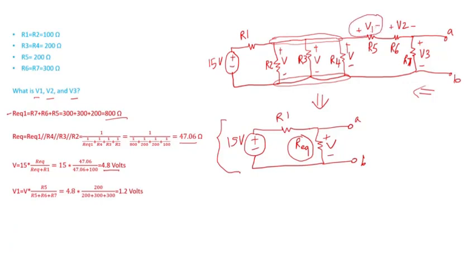V1 equals V times R5—R5 is the resistance across which the voltage I'm trying to calculate—divided by R5 plus R6 plus R7, basically the resistances that are in series. If I carry out the calculation, I get 1.2 volts.